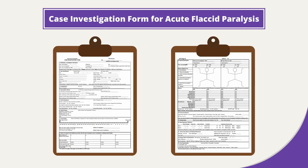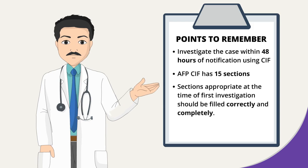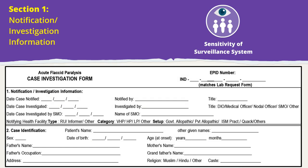Let's start filling the form section-wise. Investigate the case within 48 hours of notification. All sections should be filled correctly and completely. The first section is on notification and investigation information. This section is important to understand the sensitivity of the surveillance system to detect the case early and to investigate the case within 48 hours of notification.